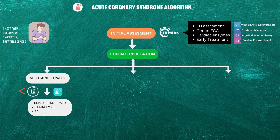If the time from the onset of symptoms is less than 12 hours and there is no contraindication to fibrinolytic therapy, consider reperfusion. There are two goals of reperfusion: fibrinolysis and PCI, or percutaneous coronary intervention. We have discussed both fibrinolysis and PCI in brief in separate videos on our channel, or you can watch them from the link in the description below.